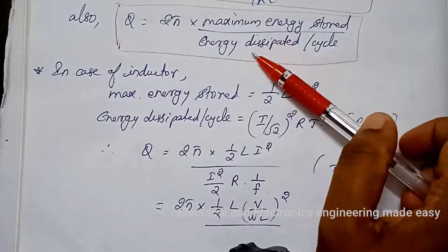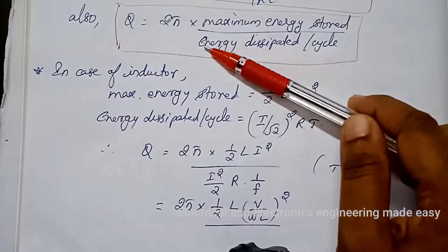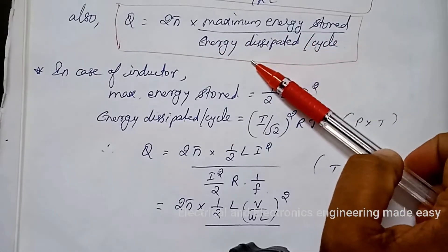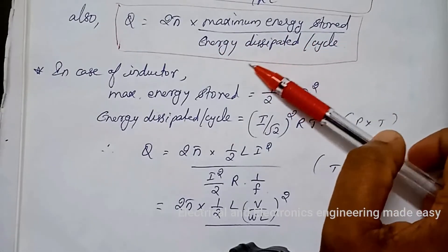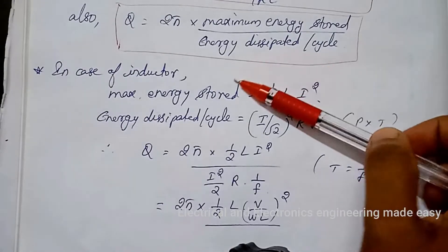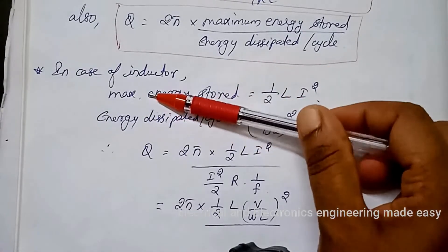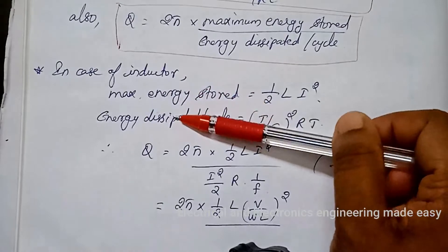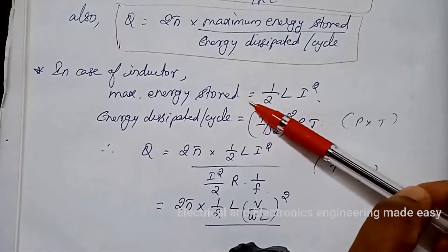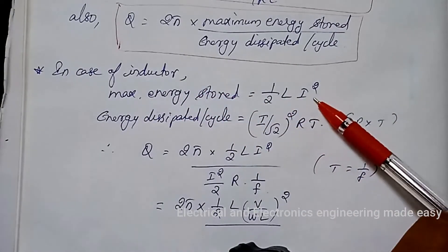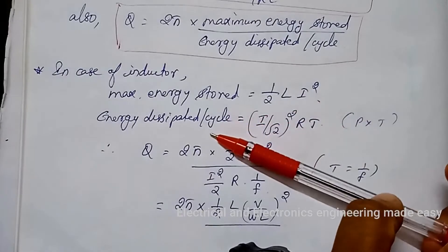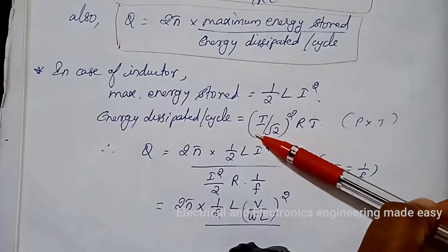Also, Q equals 2·pi times maximum energy stored divided by energy dissipated per cycle. In the case of the inductor, the maximum energy stored is half·L·I².